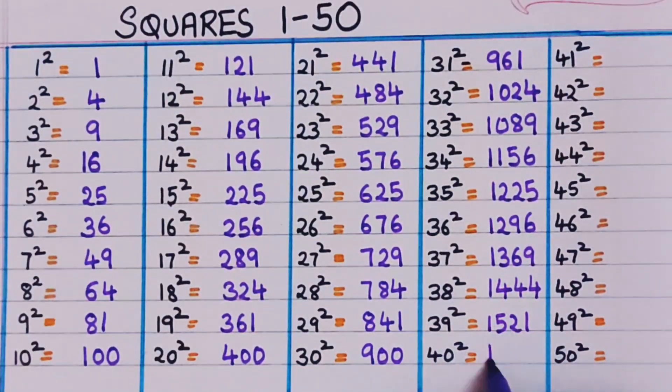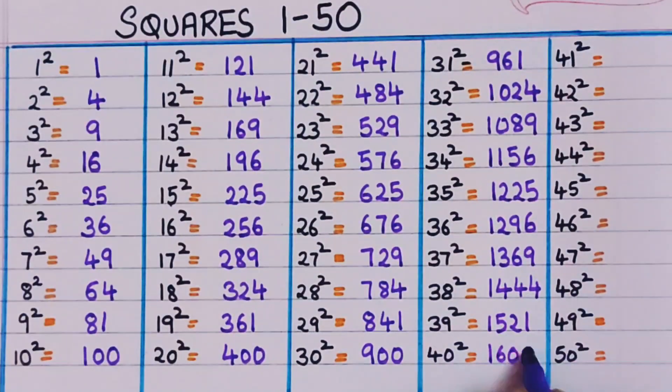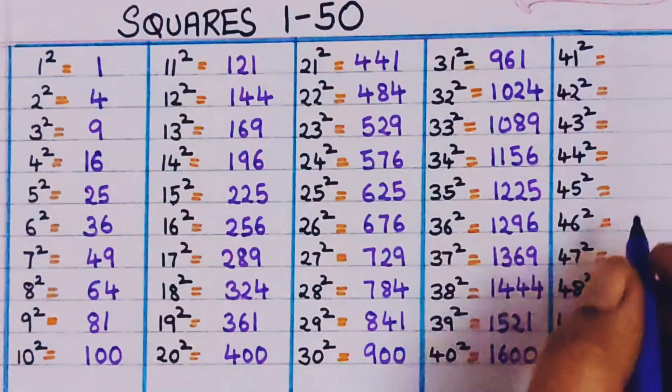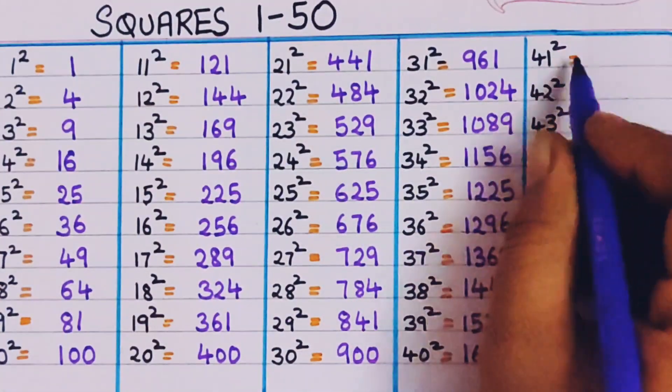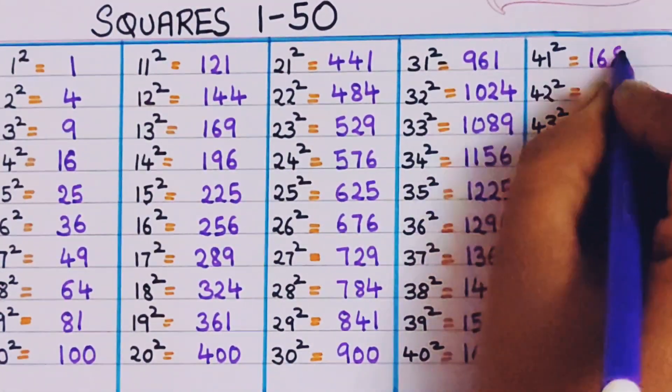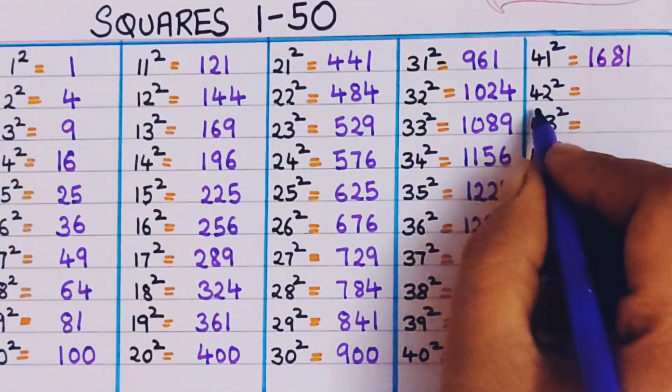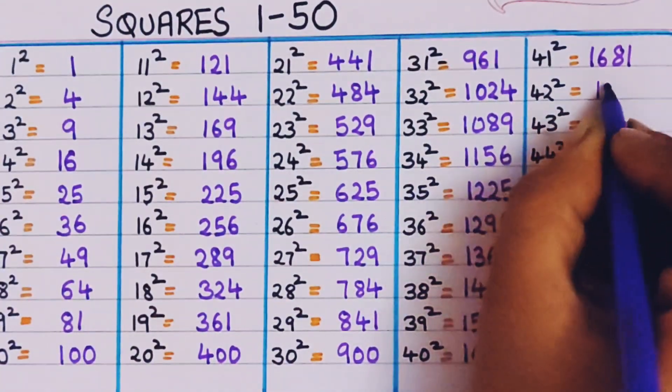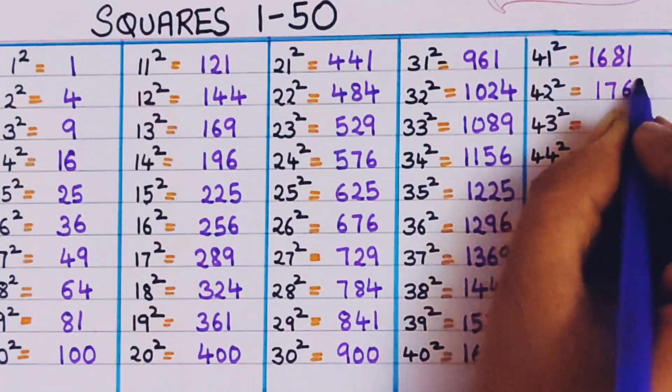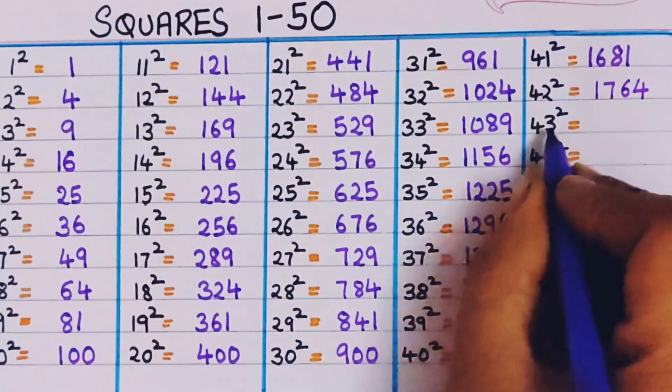40 square, 1600. 41 square, 1681. 42 square, 1764.